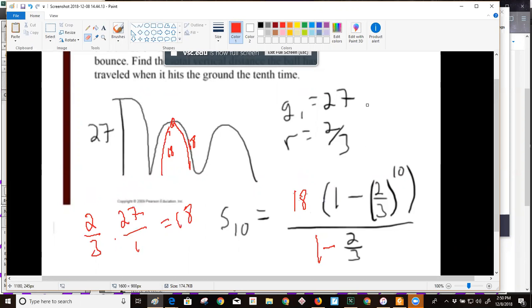So I'm going to take my answer, my one minus two-thirds to the tenth, and multiply that by three. Then I'm going to multiply that by the 18.